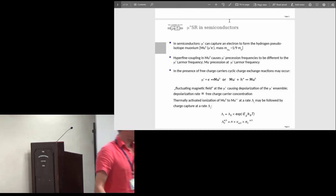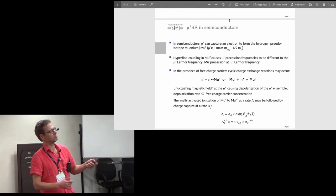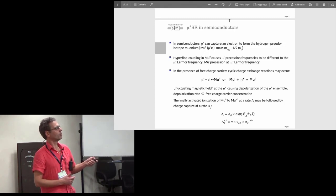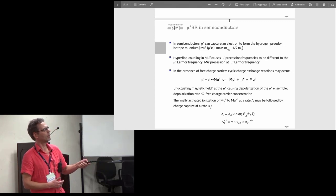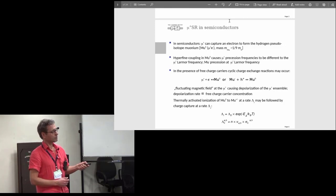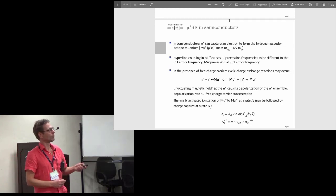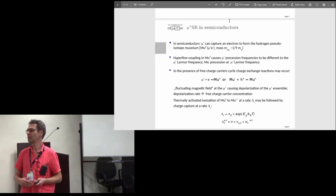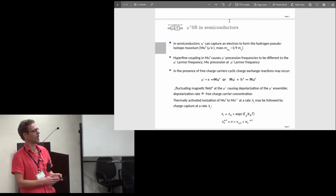In semiconductors the muons may capture an electron to form this hydrogen-like atom, the muonium state. It's a pure quantum electrodynamic system with mass of one-ninth of the hydrogen atom. So the muon mass is one-ninth of the proton mass. In the muonium state, if you apply magnetic field, the precession signature is different to a free muon which processes at the Larmor frequency because you have hyperfine coupling and there will be transitions between the hyperfine states which will change the precession frequency.